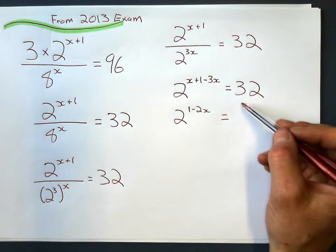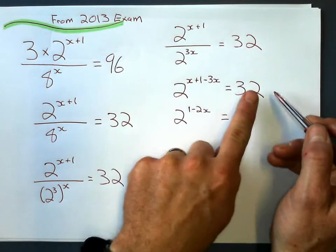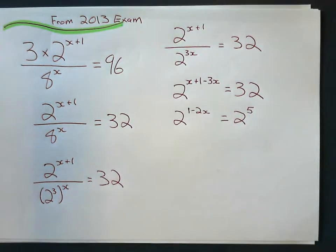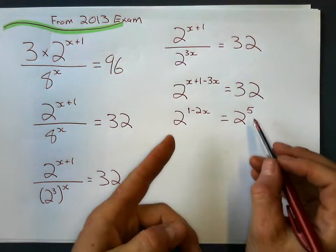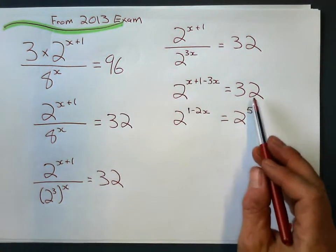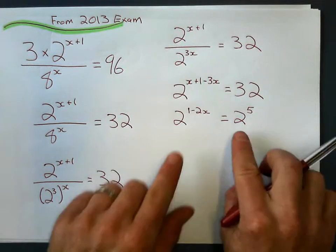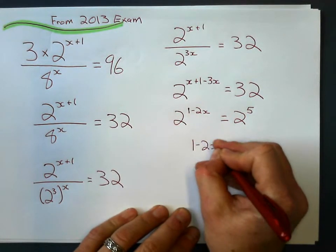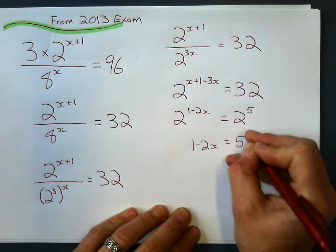And I'm going to cheat a little bit here, not really cheat, but do you know that 32 is a power of 2? Do you know that it's just 2 to the power of 5? You may not know that. And if you don't, then you'll have to use logarithms and go around the long way. But it's good to know your powers of 2, and 32 is one of them. So I've got the same base, so I set the exponents equal to each other. 1 minus 2x equals 5.